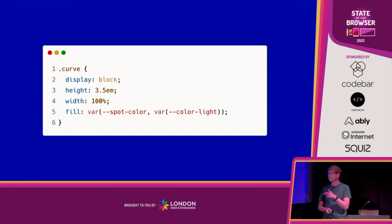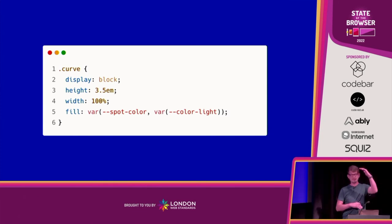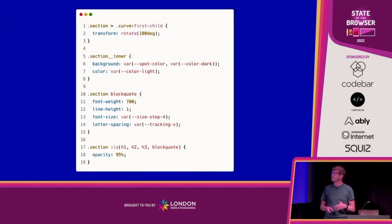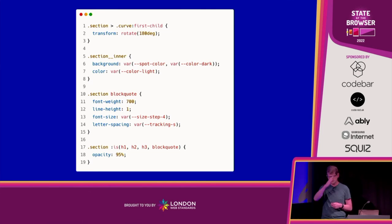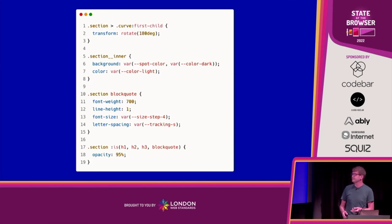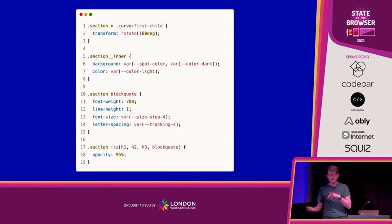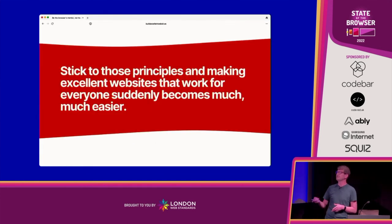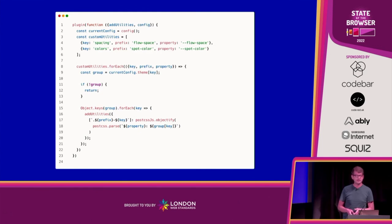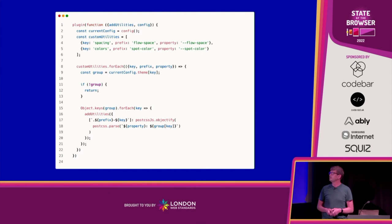I'm using a custom property `--spot-color`, falling back to the light color in my design tokens. The region blocks with curves take the first curve and flip it for when it's the first child — making it a top curve. We look for the spot color to set the background. So if you set a spot color on one of these sections, it'll color the curve and the background of the section. The spot color utilities are generated by Tailwind.